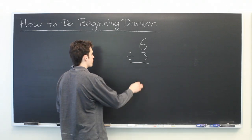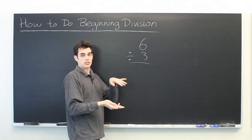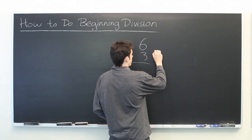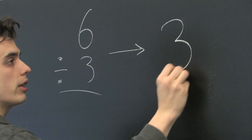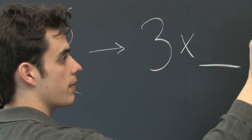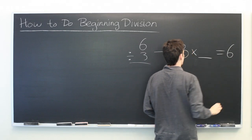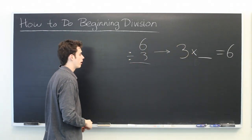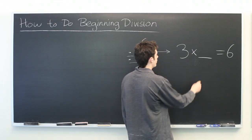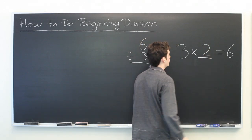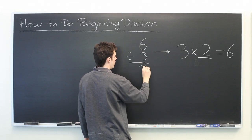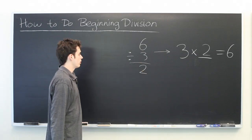One strategy is to remember that division is the opposite of multiplication. So you can rewrite this as 3 times something equals 6. From here you can guess and check until you get the right answer, which is 2. You can bring that answer back over here — 6 divided by 3 is 2.